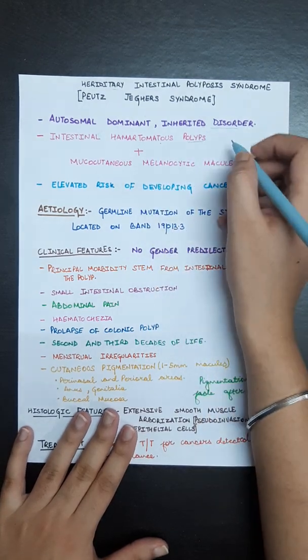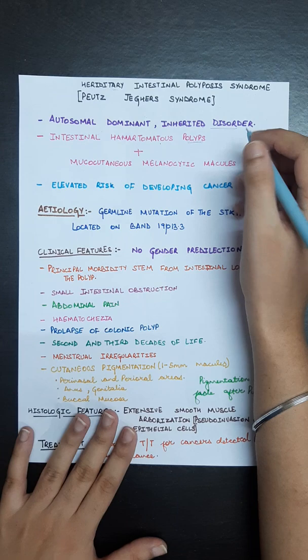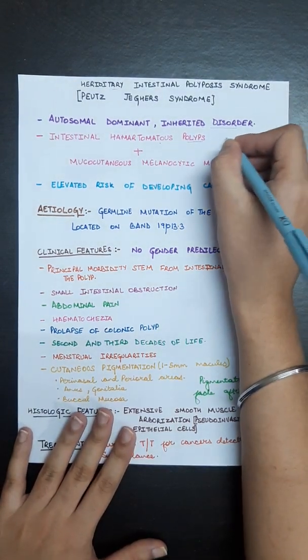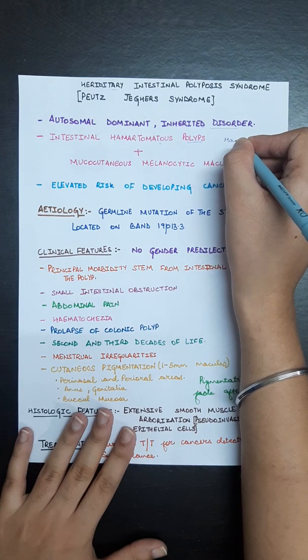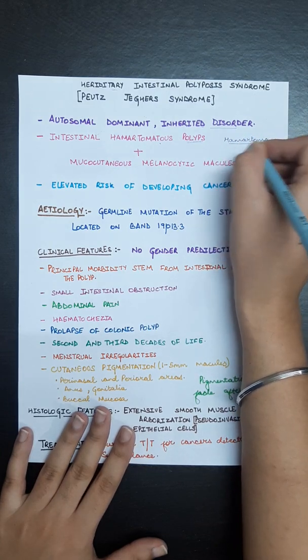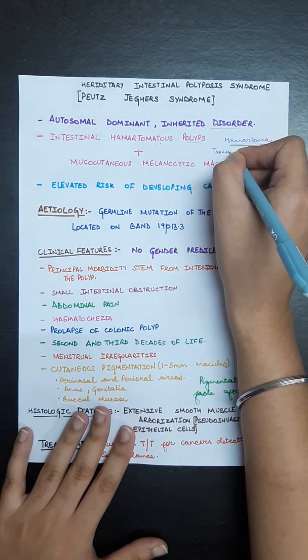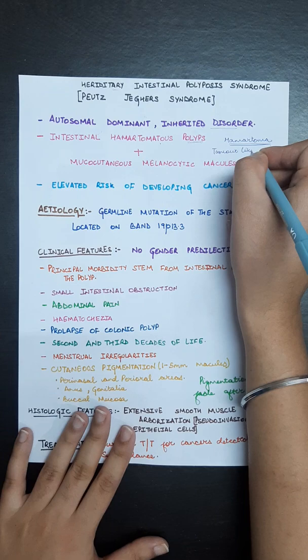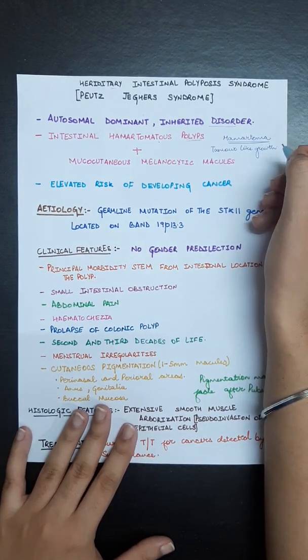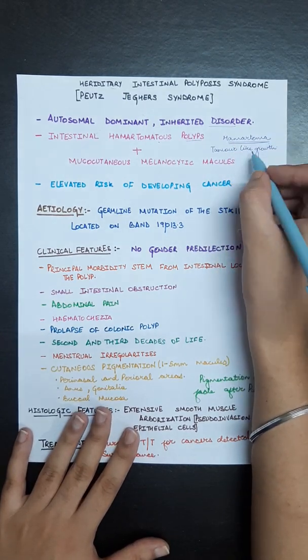Hamartoma is a tumor-like growth made up of normal but abnormally arranged cells. These are normal cells.